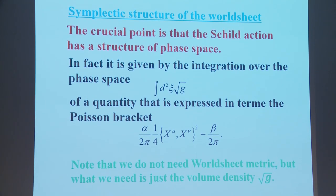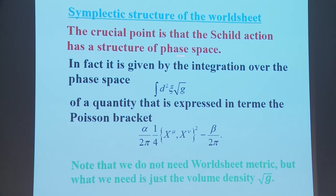The crucial point is that the Schild action has a structure of phase space: it is given by integration over the phase space of a quantity expressed in terms of the Poisson bracket. Note that we do not need a worldsheet metric — what we need is just a volume density √G.